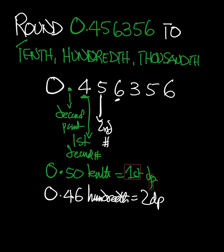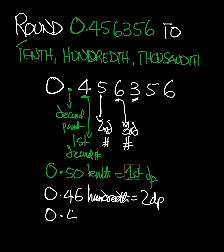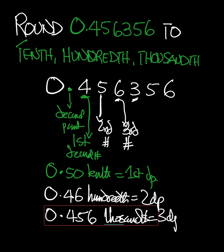So that's going to give us 0.46 — corrected to the 100th place, or two decimal places. The next one is to round it to the 1,000th. We identify the third decimal number here. We ask: what is the number after this third decimal number? That number is 3. Since 3 is less than 5, we're not going to add anything to the 6 — we just leave it as it is. So we get 0.456, corrected to the 1,000th, which is the same as three decimal places.